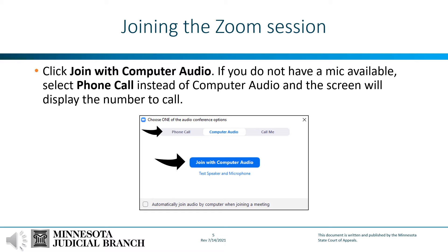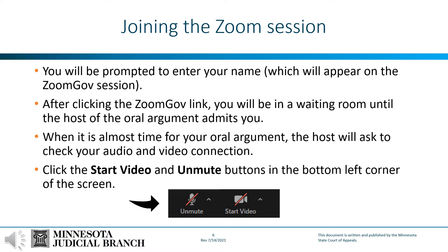Once you have clicked the ZoomGov link on the correct calendar page, click 'Join with Computer Audio' when prompted. If you do not have a microphone available on your computer or headset, select 'Phone Call' instead of computer audio, and the screen will display the telephone number to call. You will be prompted to enter your name, which is what will appear on the ZoomGov screen to identify you. Please make sure your name is correct so the host and judges can identify you. At this point, you will be put into a waiting room where you will remain until the host admits you to the ZoomGov session.